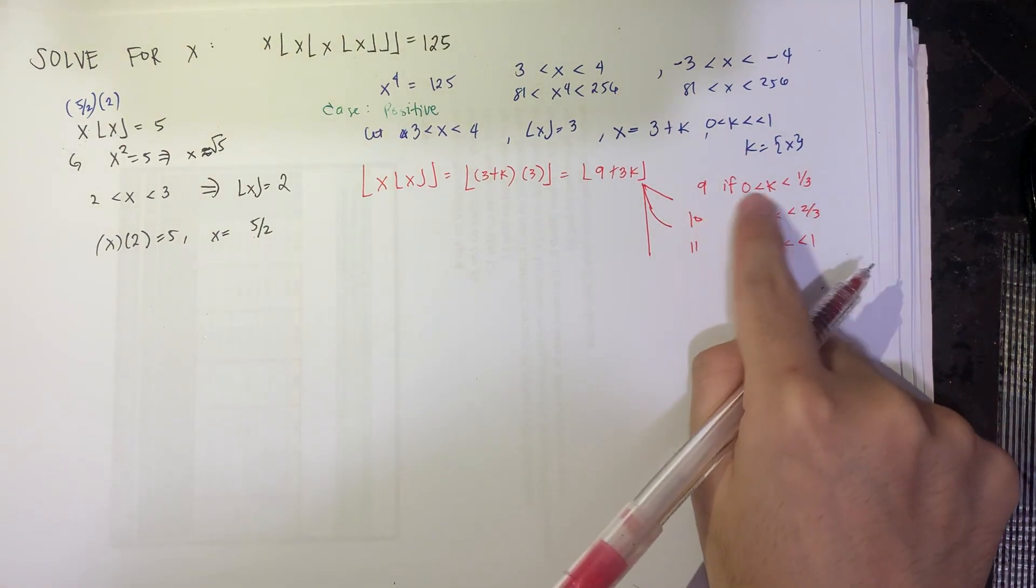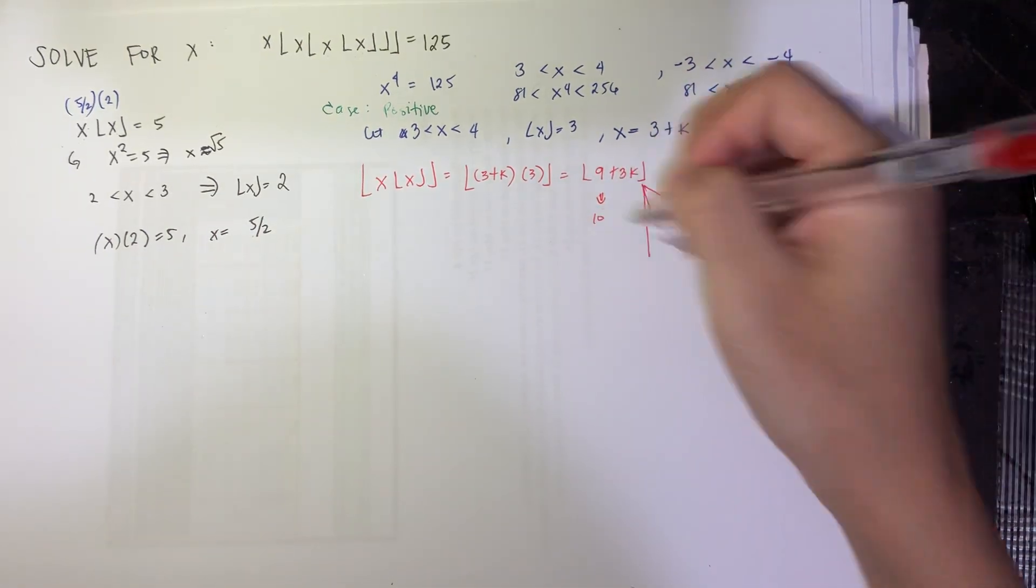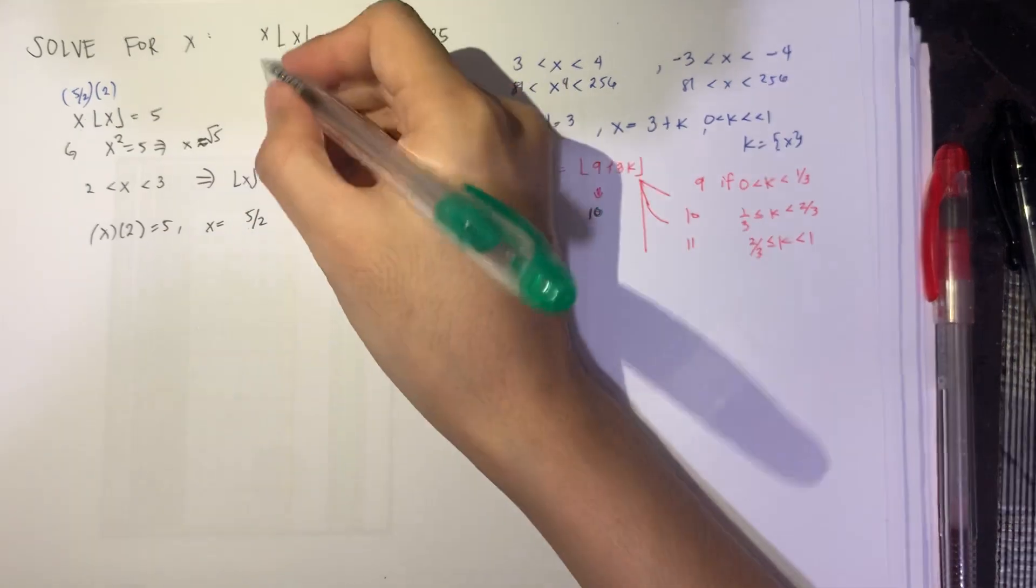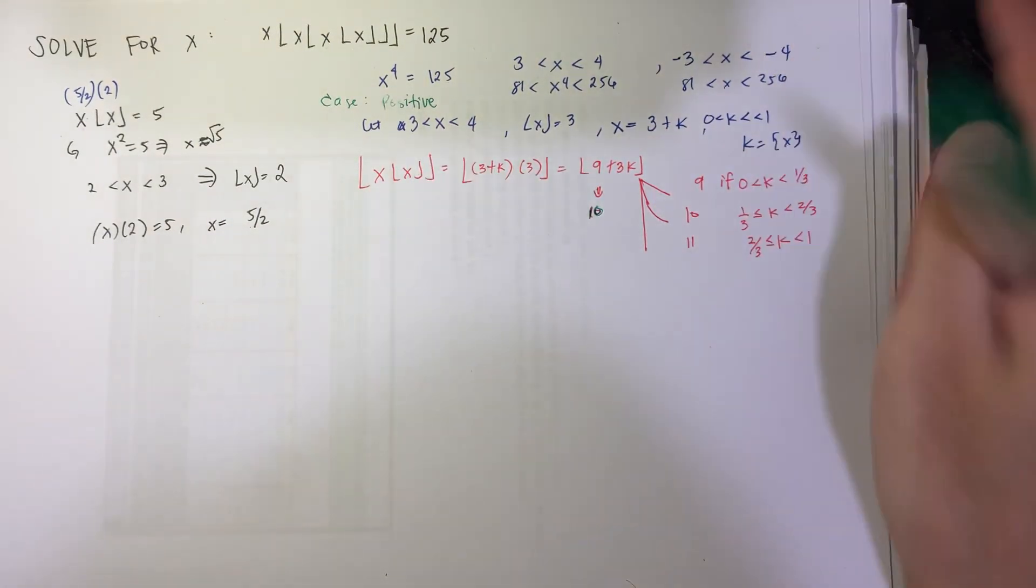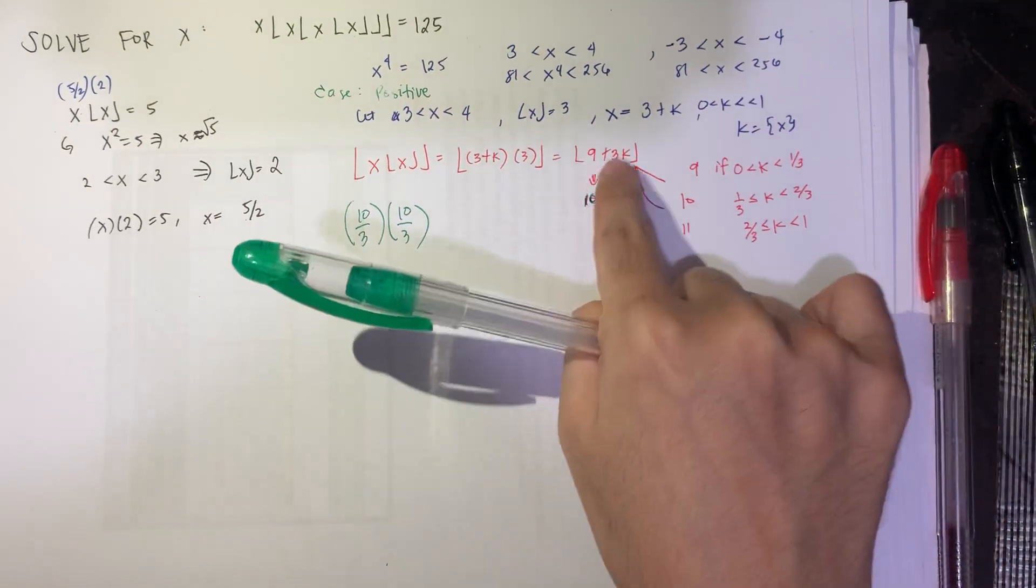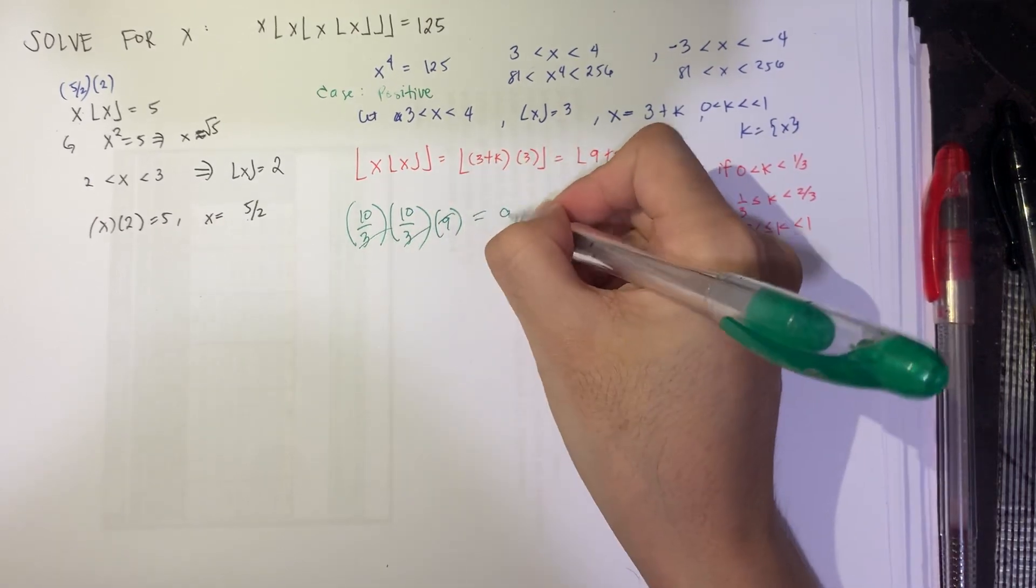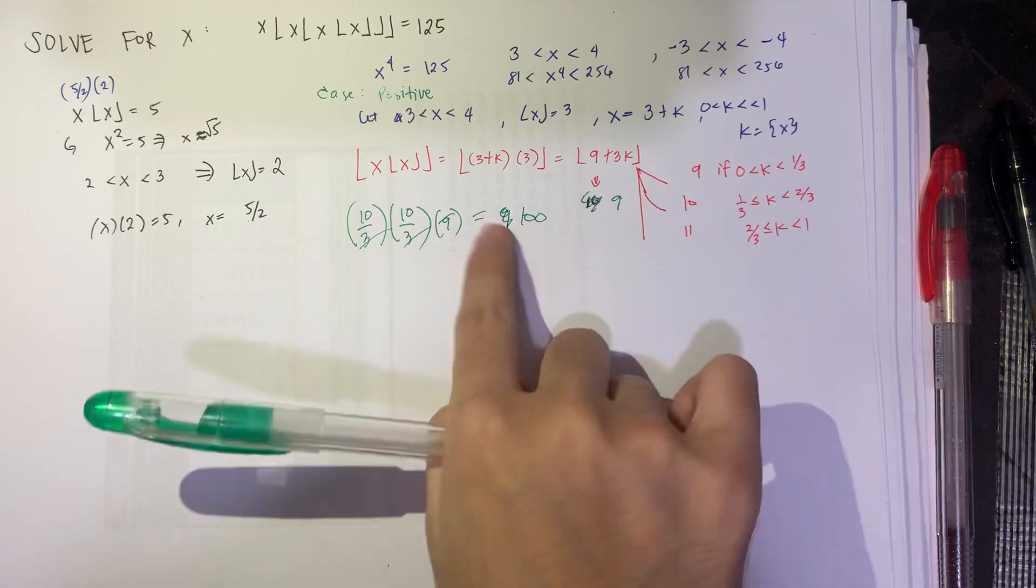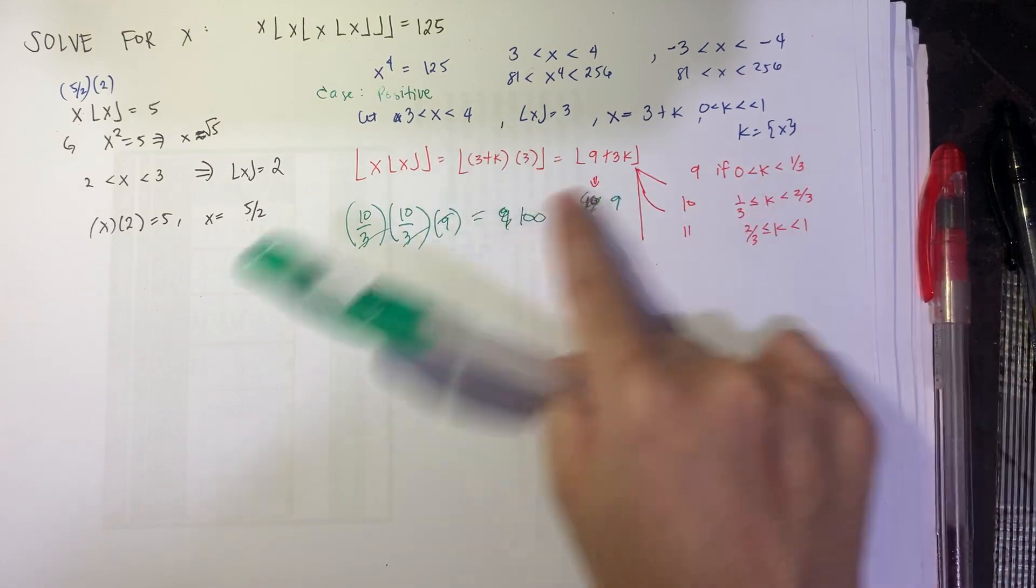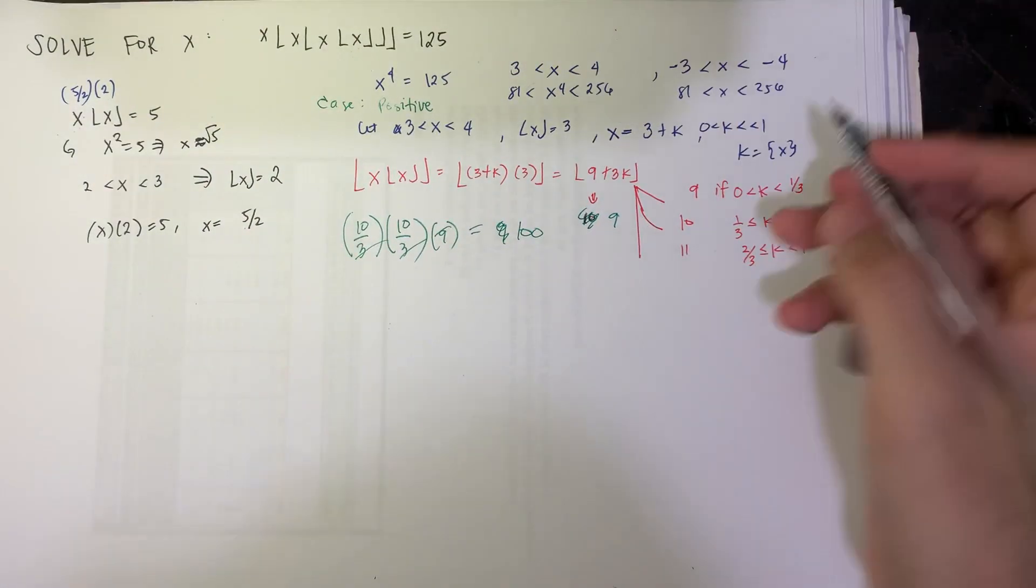Let's suppose k is between 0 and 1 third, so this becomes 9. So if we look back here, your x is at most 3 plus 1 third, which is 10 thirds. So 10 thirds times 9, which is 100. So at best, I'm not evaluating the floor functions. At best, this k gives you only 100. So it won't satisfy this value. So in other words, we just eliminate this k.